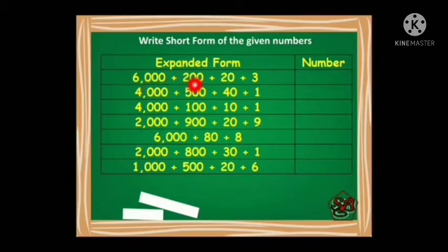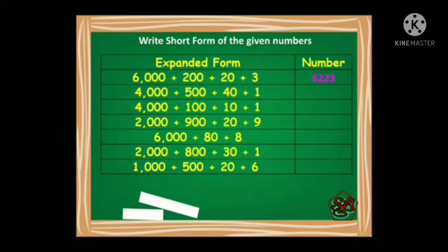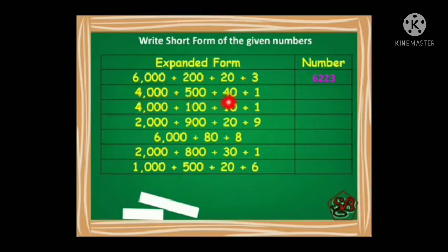6000 plus 200 plus 20 plus 3: digit 6 goes in thousands place, 2 in hundreds place, 2 in tens place, and 3 in ones place — the number formed is 6223. The next number is 4000 plus 500 plus 40 plus 1: 4 in thousands place, 5 in hundreds place, 4 in tens place, and 1 in ones place — that is 4541.